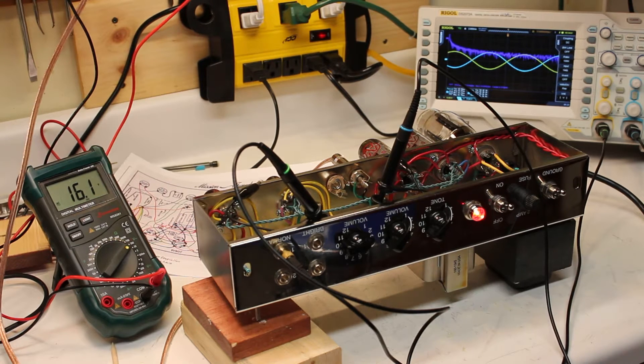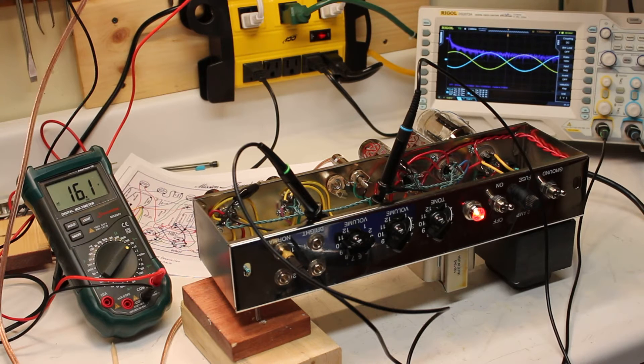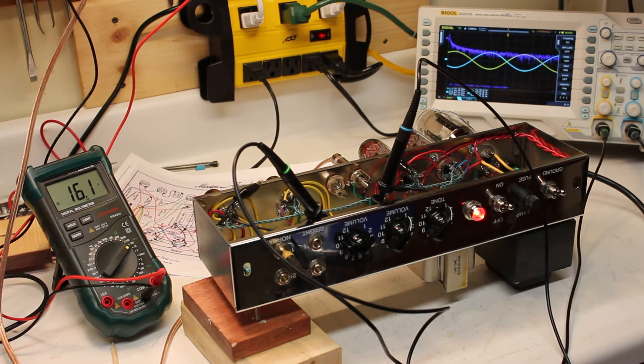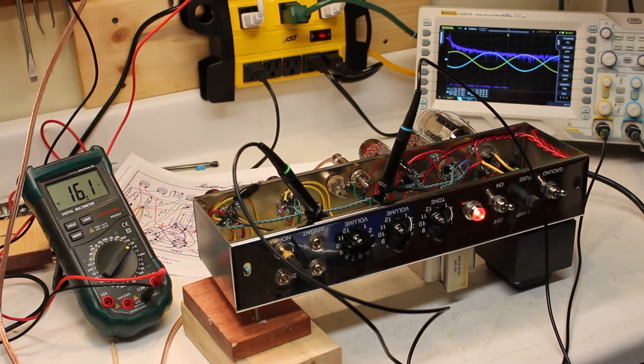On the scope you can see I have both of the probes hooked up on either side of the phase inverter. So this is showing that we're getting a pretty good signal going to both tubes.